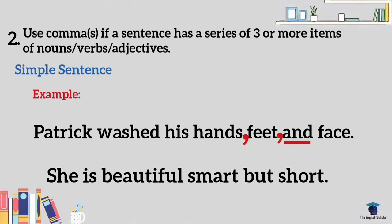Now you try the second example — pause this video and write your answer in the comments below: 'She is beautiful, smart, but short.' The correct answer is: 'She is beautiful comma smart comma but short.' Congratulations if you got it right!